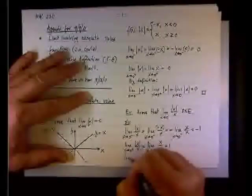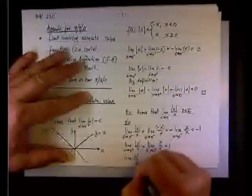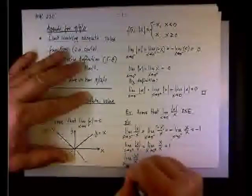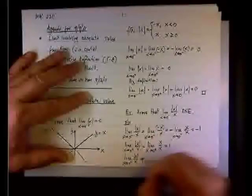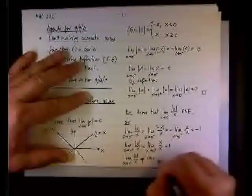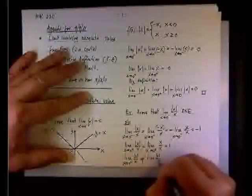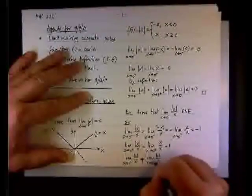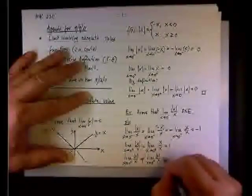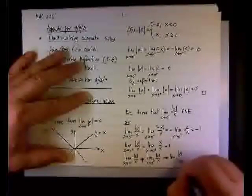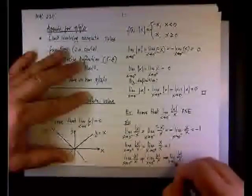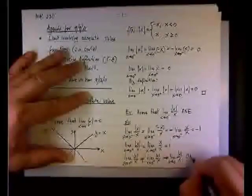And of course, by definition, they're not equal to each other. So the limit of the absolute value of x over x as we approach from the left is not equal to the limit as we approach from the right. Therefore, the limit of this function as x approaches 0 does not exist.